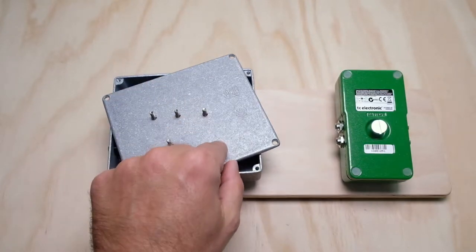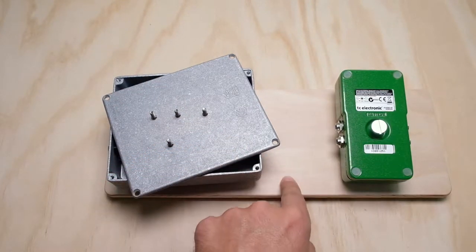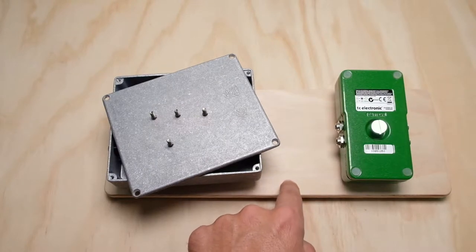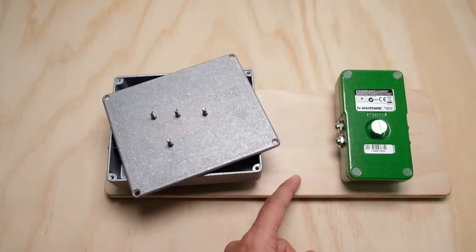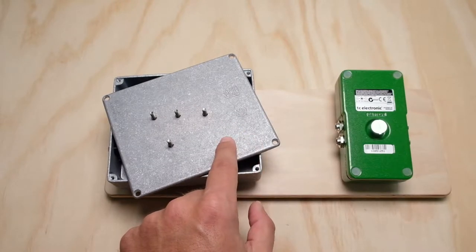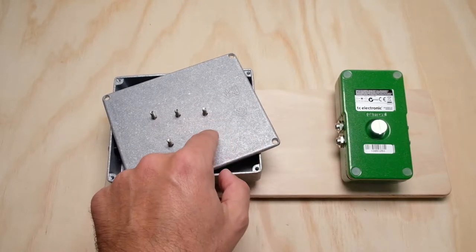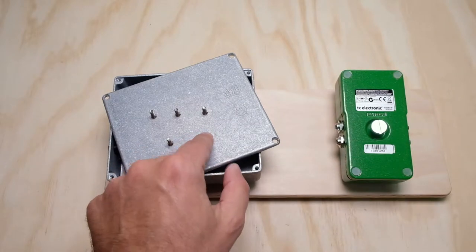Take the back cover of the pedal, put it down on your pedalboard where you're going to mark four holes which you're going to have to drill out. Then the new longer bolts are going to come up through the bottom of the pedalboard, through the back cover, and into the pedal, bolting the pedal to the pedalboard.